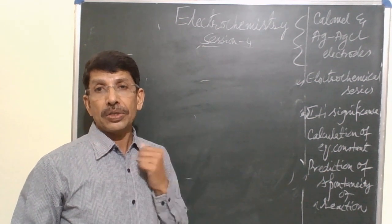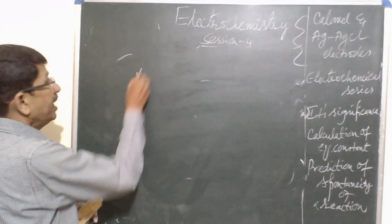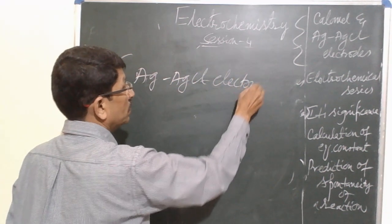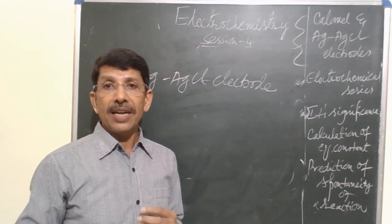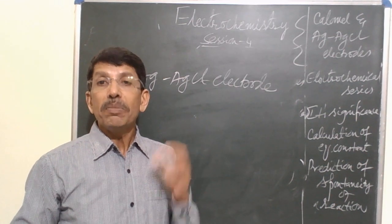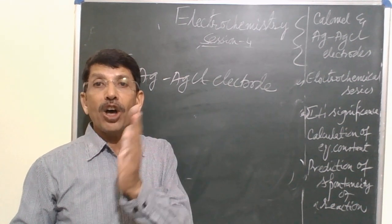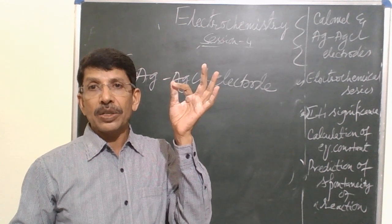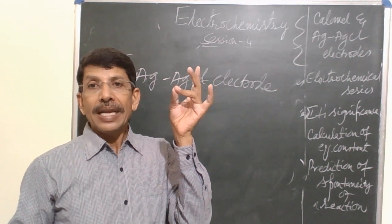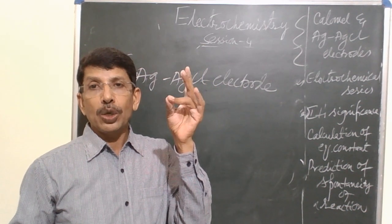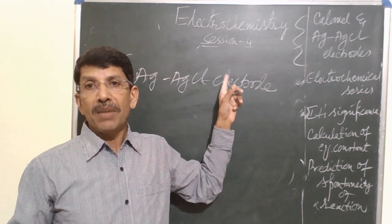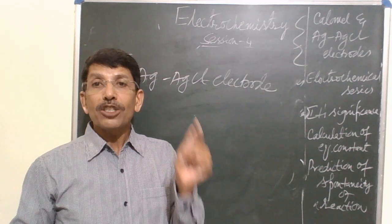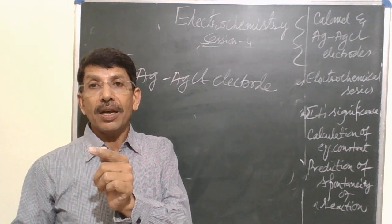The next electrode is the silver-silver chloride electrode. Both the calomel and silver-silver chloride electrodes are examples of metal-insoluble salt electrodes. In the calomel electrode, mercury is the metal and mercurous chloride (Hg₂Cl₂) is the insoluble salt. In the silver-silver chloride electrode, silver is the metal and silver chloride is the insoluble salt in water. These fall under the category of metal-insoluble salt electrodes, along with gas electrodes and redox electrodes.